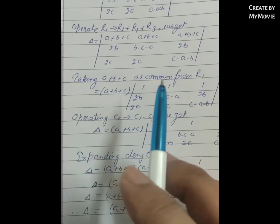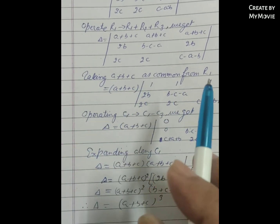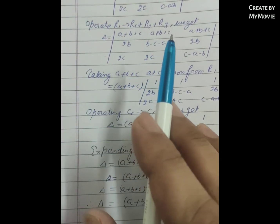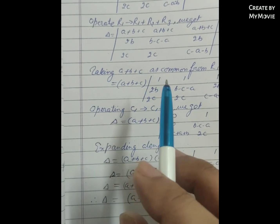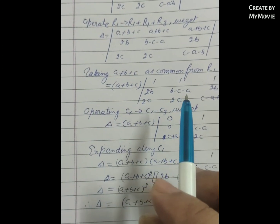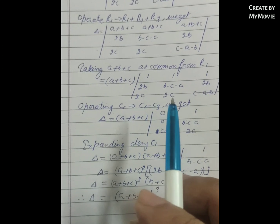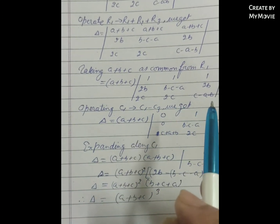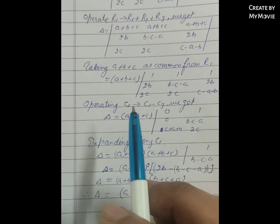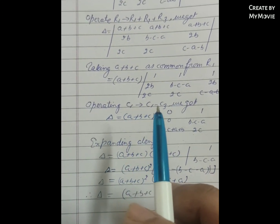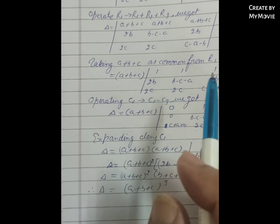Taking (a+b+c) as common from row one, the determinant becomes (a+b+c) times the determinant with row one as [1, 1, 1], row two as [2b, (b−c−a), 2b], and row three as [2c, 2c, (c−a−b)].